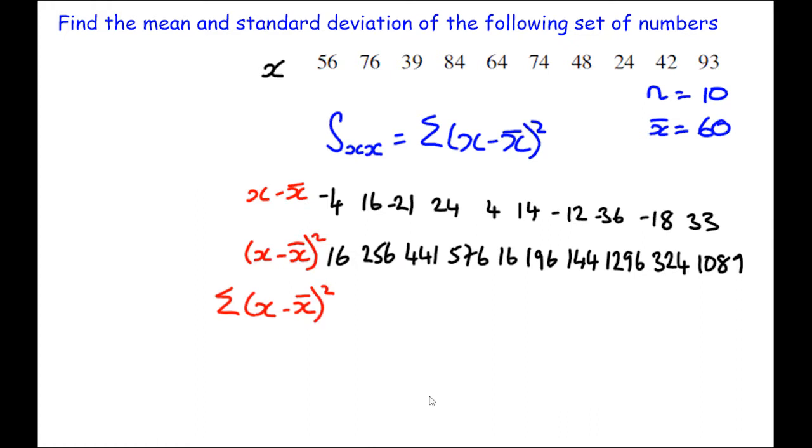And now I actually want to get the sum of all of those deviations from the mean. Adding all of those values together gets me 4,354. This is the sum of the square deviations.